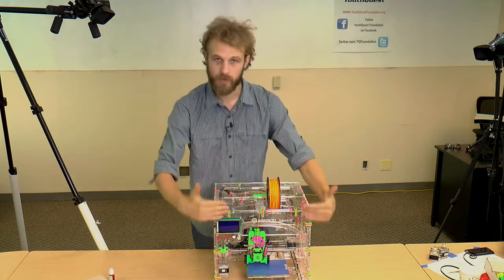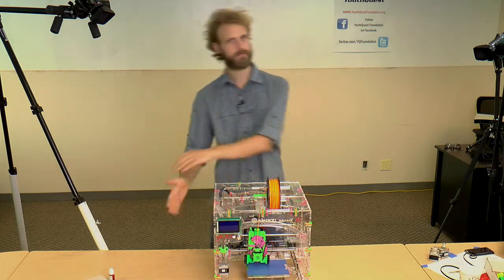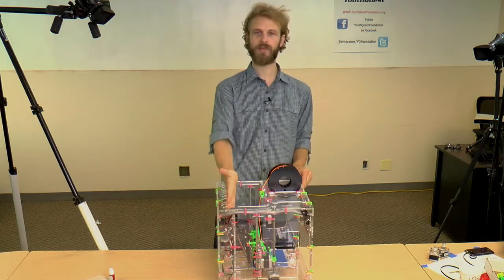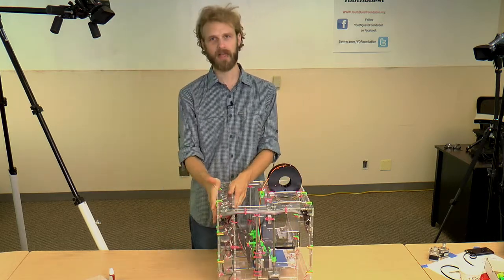Looking straight at the printer, this is the front, the back, left and right, top and bottom. There's also the inner back on which we mount the electronics.